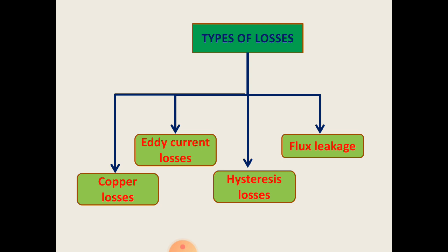What are the types of losses in a transformer? There are 4 losses: copper losses, eddy current losses, hysteresis losses, and flux leakage.